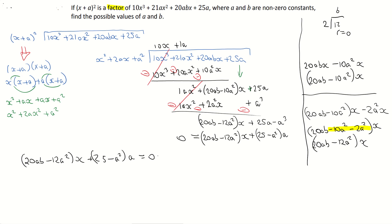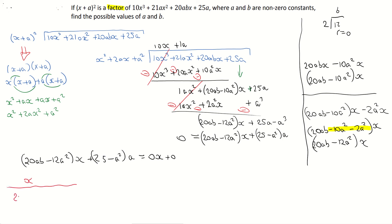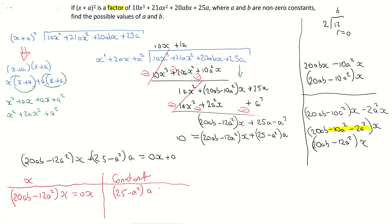I'm going to bring in a placeholder and call that 0x plus 0, so I have my variable x matched to my x, and my constant matched to my constant. So matching up the x's: 20ab minus 12a squared times x is equal to 0x. And on my constants: 25 minus a squared all times a is equal to 0.